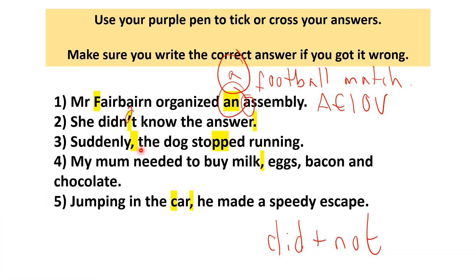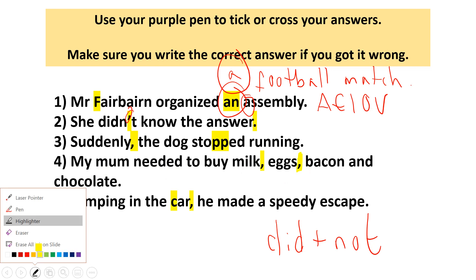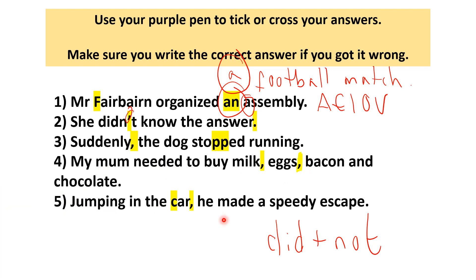Number three: 'Suddenly, comma, the dog stopped running.' Number four: 'My mum needed to buy milk, eggs, bacon and chocolate.' This is a list, so the items in the list are separated by commas. Number five: 'Jumping in the car, he made a speedy escape.' The capital letter for C here isn't needed because 'car' is a common noun, and the comma is needed to make the sentence make sense.